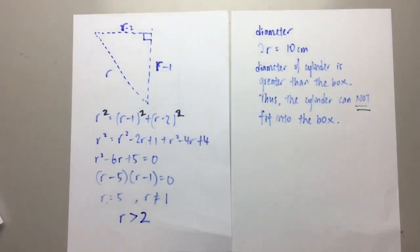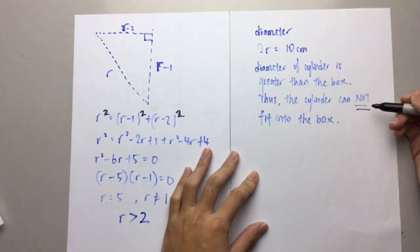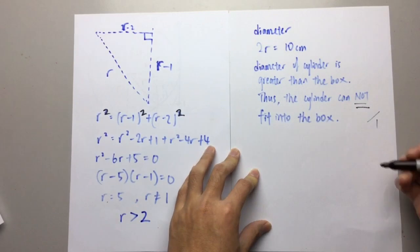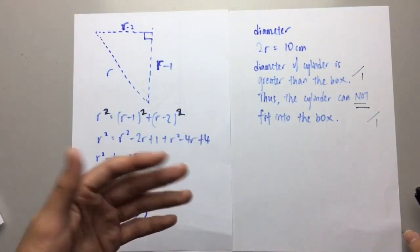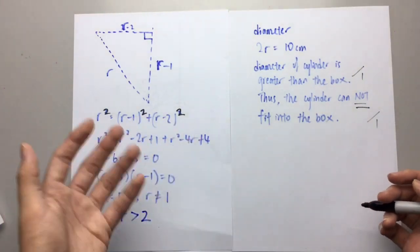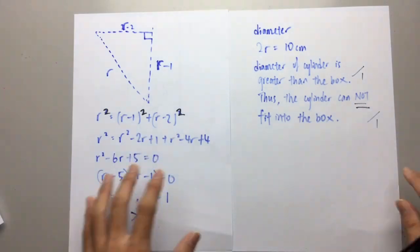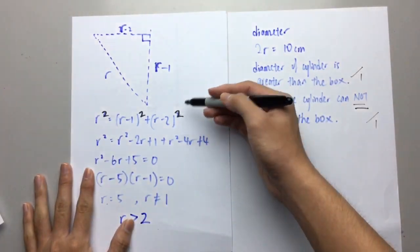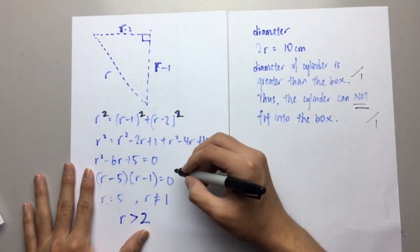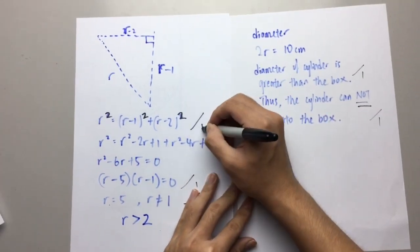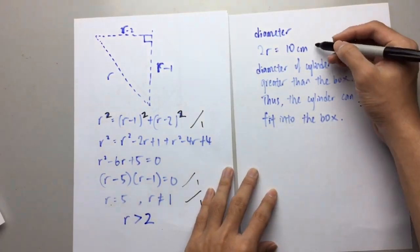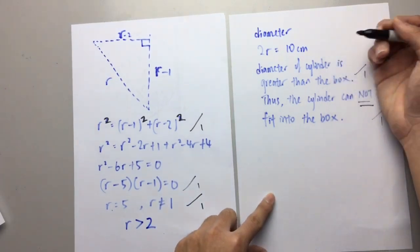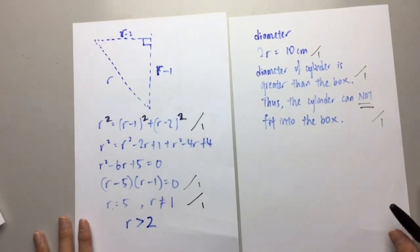How does the examiner give marks? This question allocates 6 marks. For your conclusion — answering yes or no — you get one mark. Giving the comparison 'greater than' earns another mark. Even students who can't fully answer and write something like 21 times 7 times 7 may get one or two marks. By expanding the Pythagorean equation, you get one mark; solving for r gives another mark; and calculating the diameter gives one more mark. That totals 6 marks.